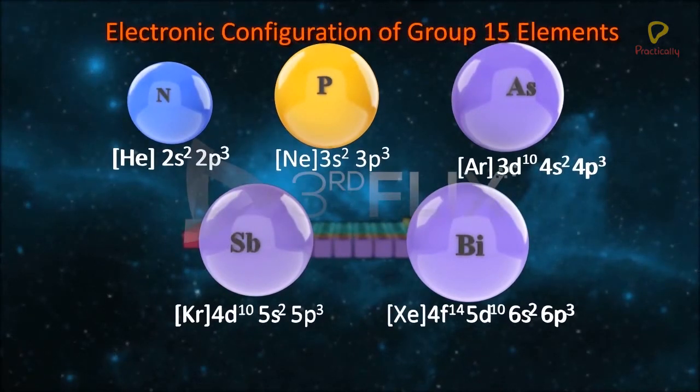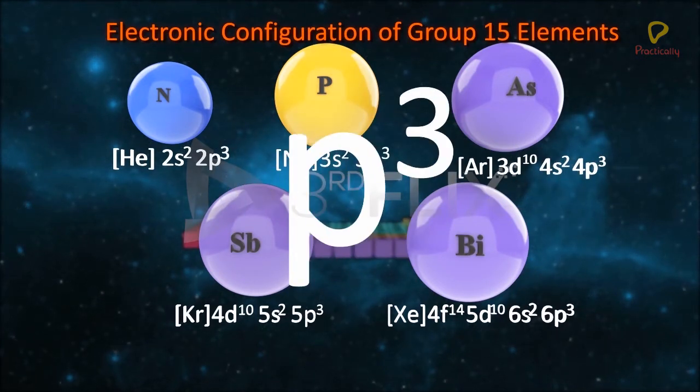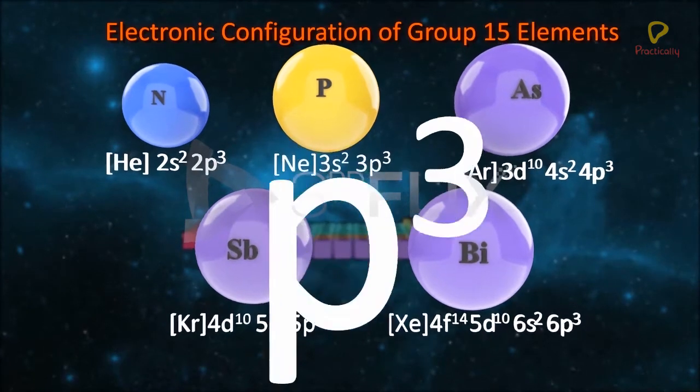Due to exactly half-filled electronic configuration of the np subshell, elements of this group are fairly stable. For example, dinitrogen is an inert gas under normal conditions.